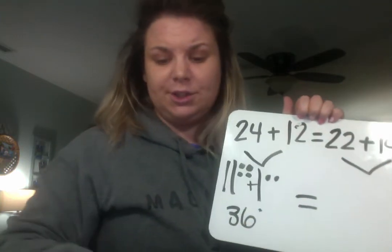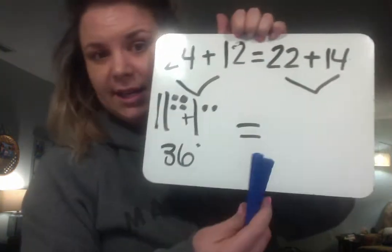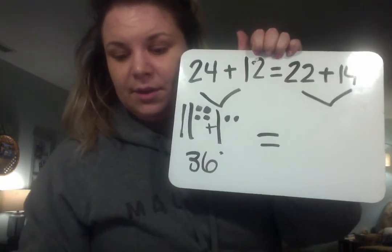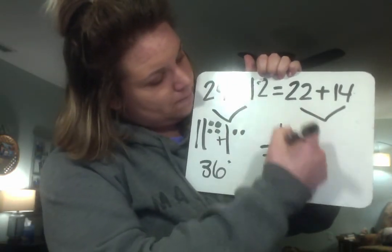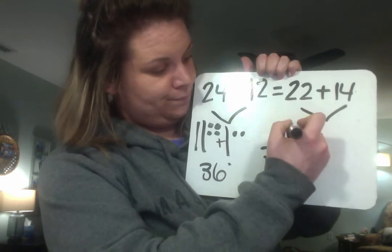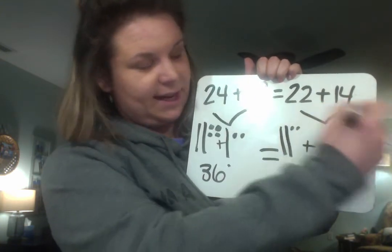Let's bring down 22 and make a quick picture. It's going to be 10, 20, right? Because there's two in the tens place. How many ones? Two.